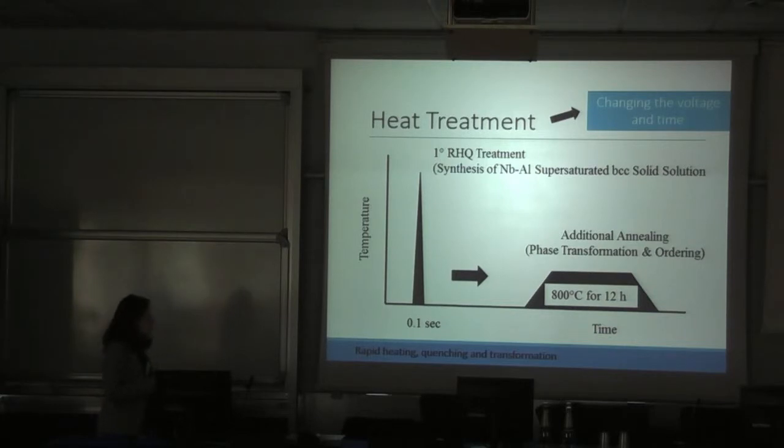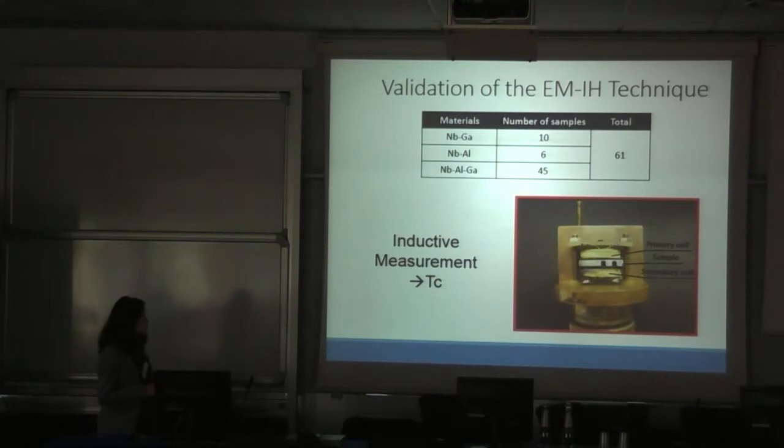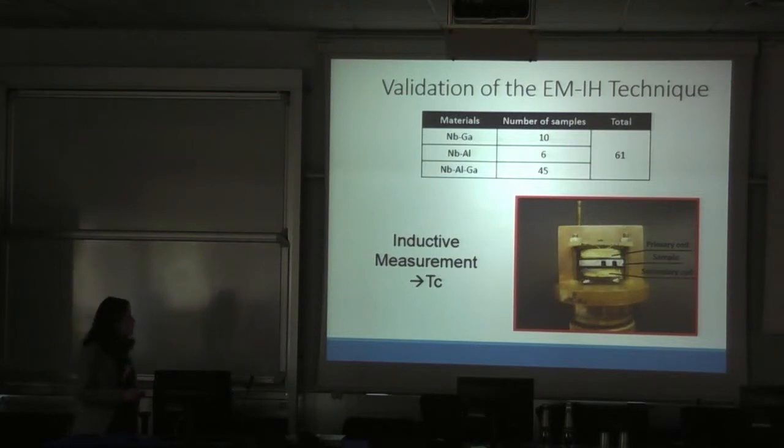We have to anneal for a long time at this temperature in order to transfer this initial phase. To see if our technique is validated, we prepared in total 61 samples, which corresponds 10 for niobium gallium system, 6 for niobium aluminum, and 45 for niobium aluminum gallium. We measure the critical temperature with an inductive equipment.